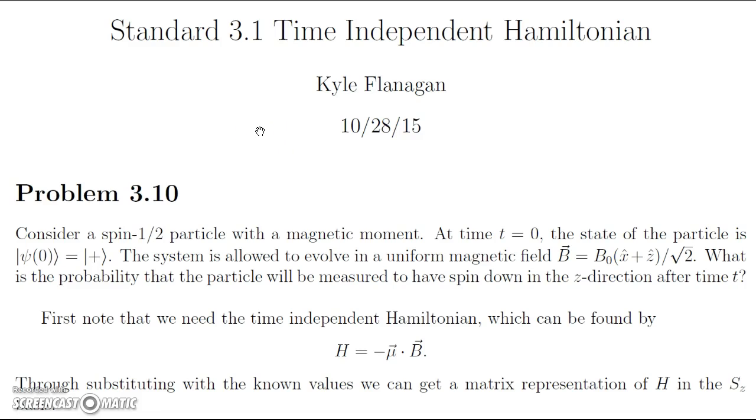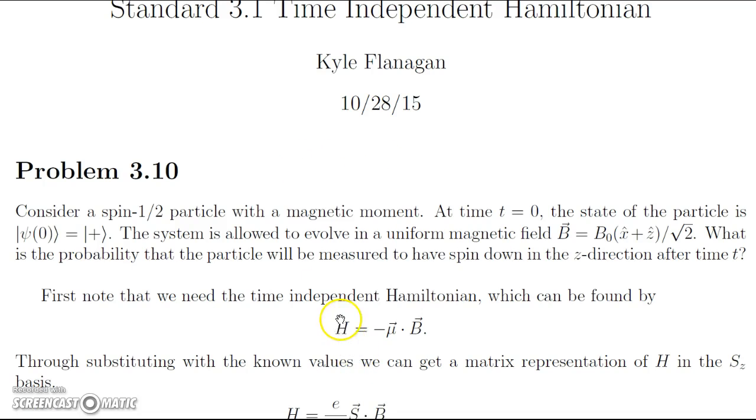To do this, we know we're going to have to be using a Hamiltonian since we're talking about time evolution. And since the magnetic field is uniform and not changing, we're going to be using the time-independent Hamiltonian. We can calculate this by the equation H, which is the Hamiltonian, equals negative μ dotted with B, where μ is the magnetic dipole moment and B is our magnetic field.